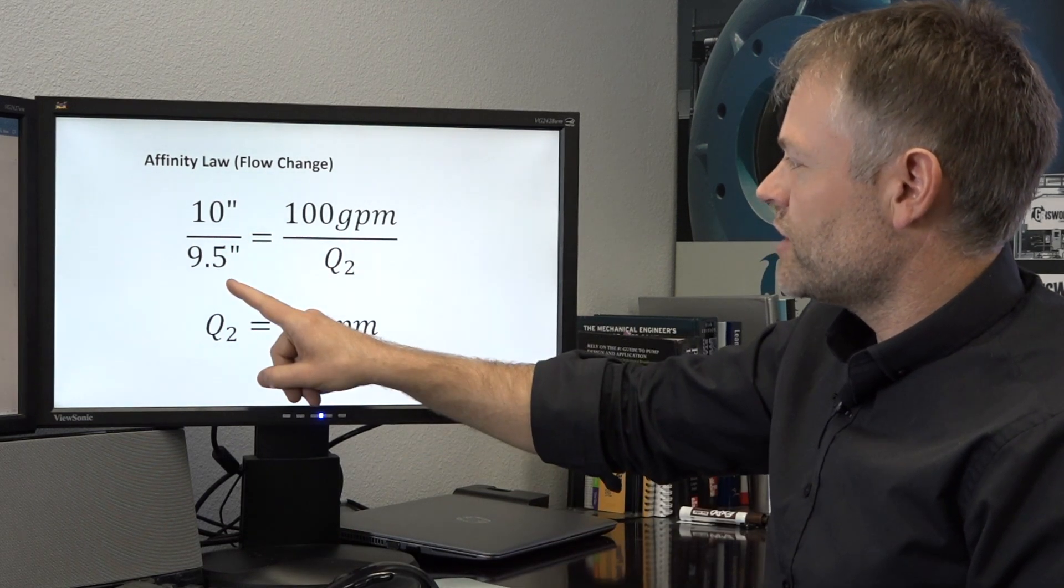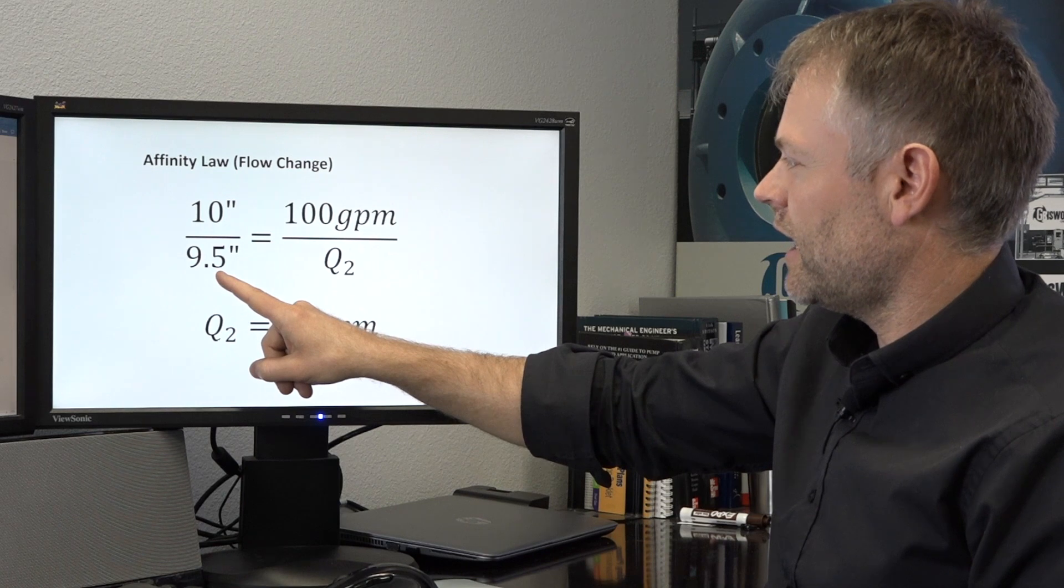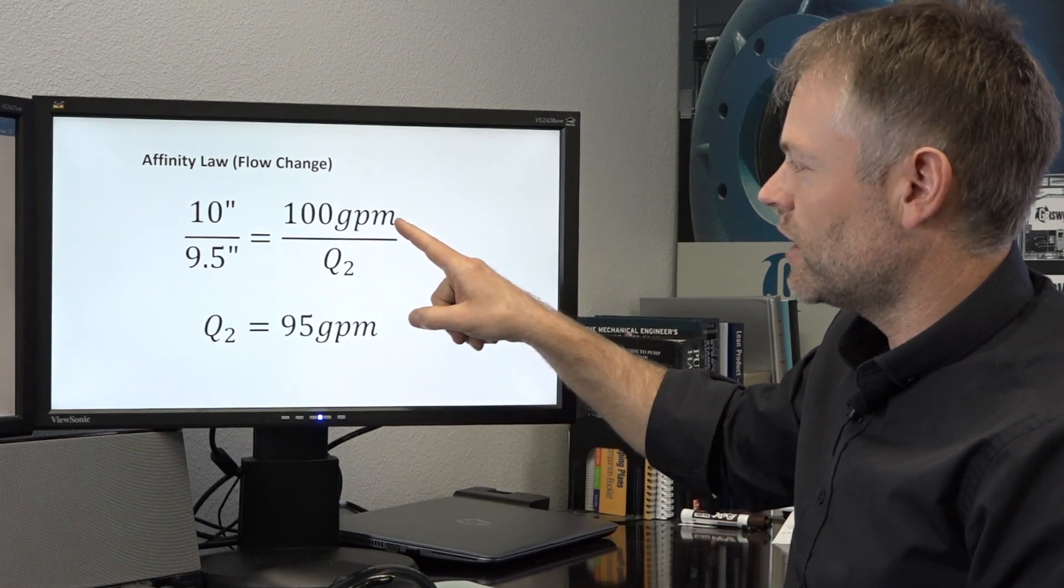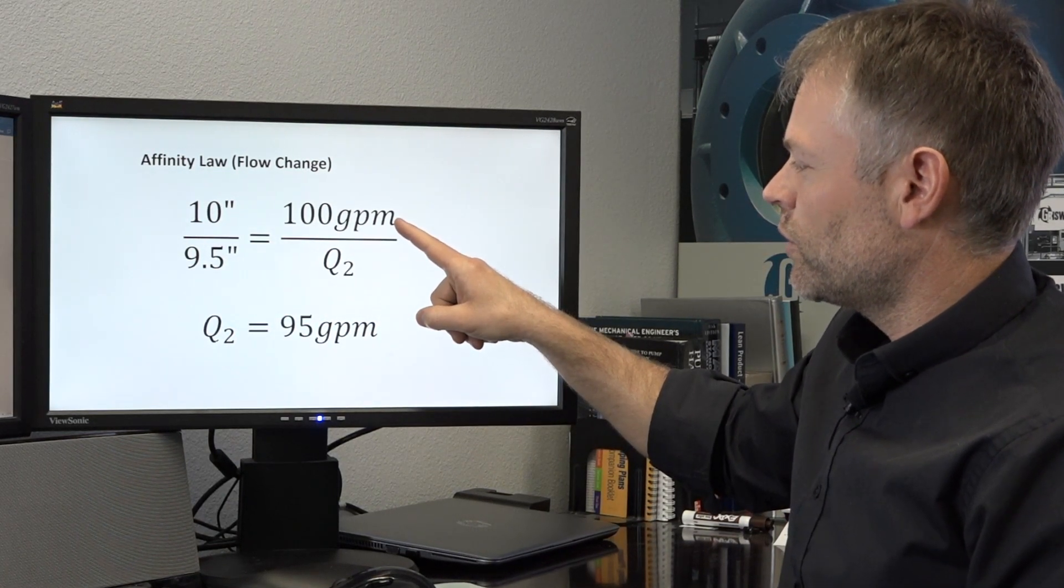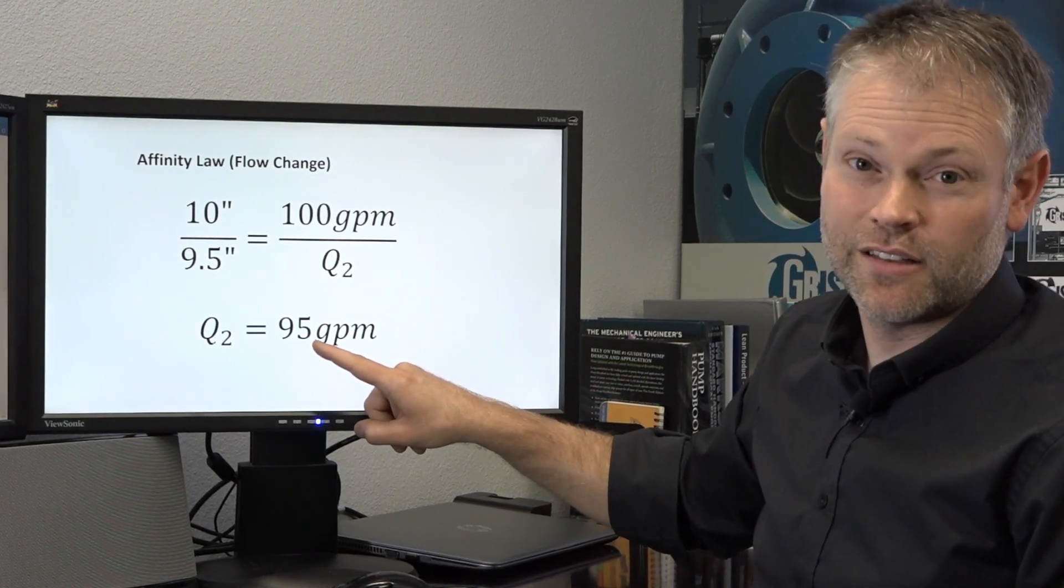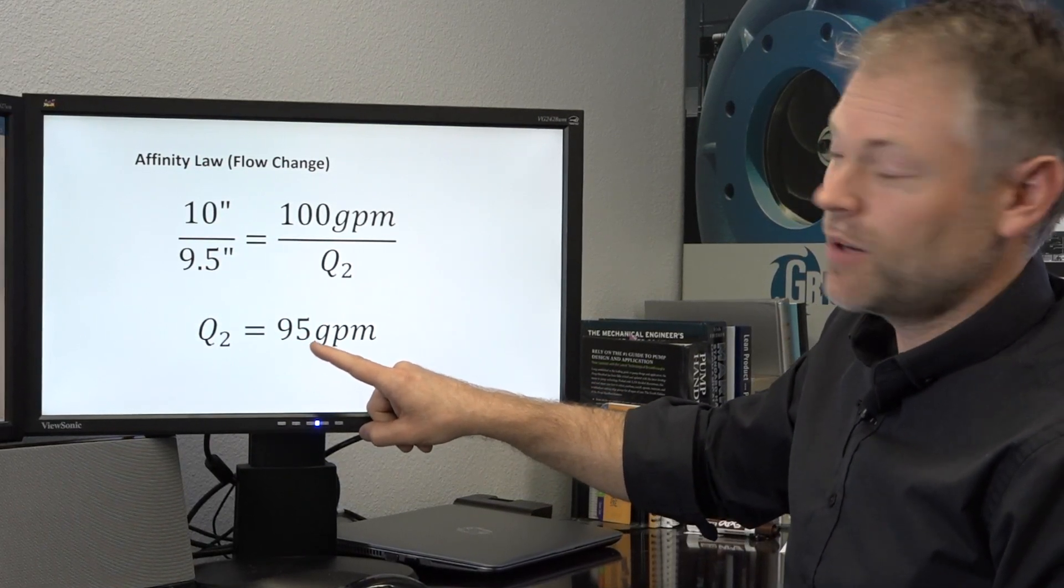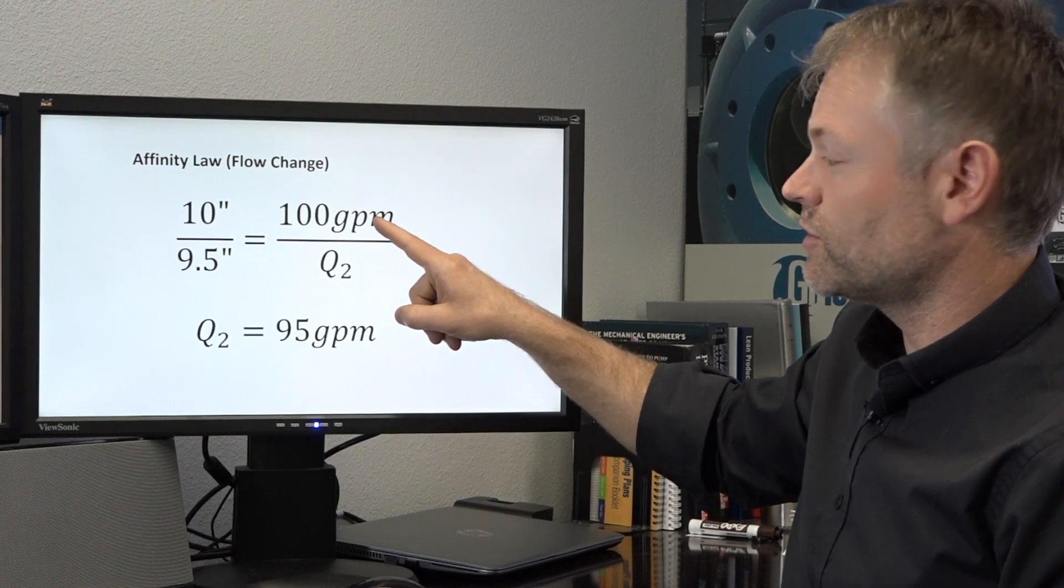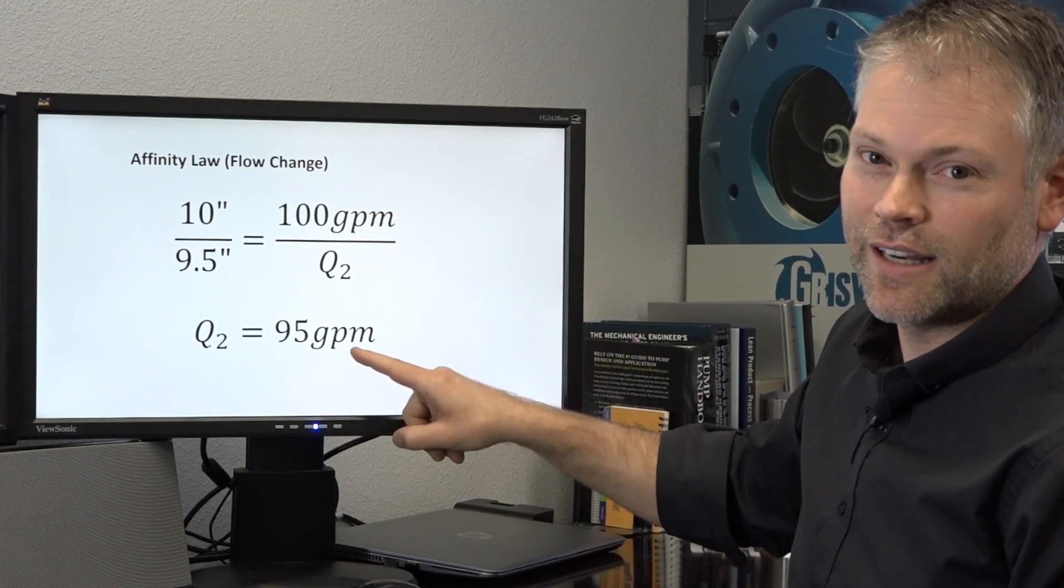If we use this equation here, 10 divided by nine and a half equals our original 100 gallons per minute, we can calculate for Q2 as 95 gallons per minute. So by trimming the impeller, the pump's flow is going to drop from 100 down to 95.